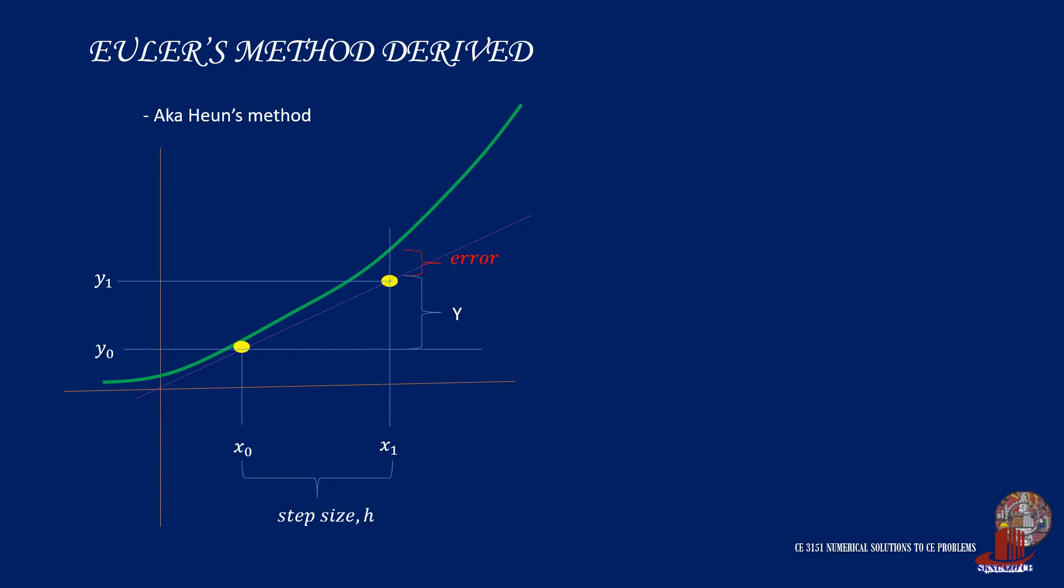And then, the second point will be using tangent again to take the location of the third point, which would create another discrepancy. So, the concept of improved or modified Euler's method tries to reduce the error by taking the average of the two tangents.